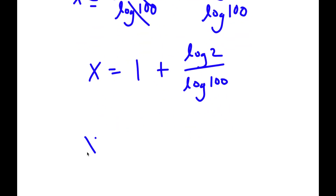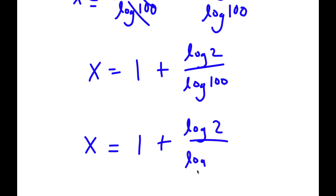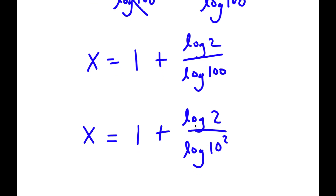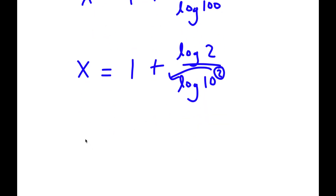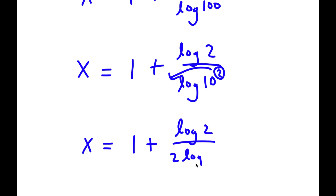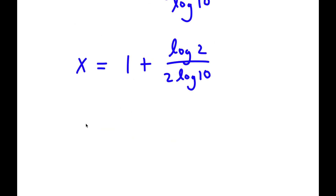Now, log 100 is the same thing as log of 10 squared. So I have 1 plus log 2 over log 10 squared. And if I have something in the form log a to the power of b, I can move my exponent to the front. So now this is the same thing as 1 plus log 2 over 2 times log 10. And log 10 is equal to 1.